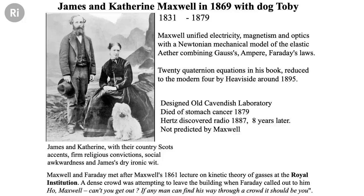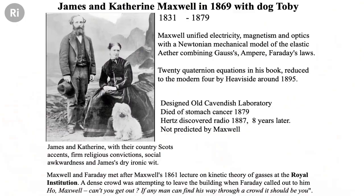Maxwell unified electricity, magnetism, and optics using a mechanical model of this ether. He applied Newton's laws to this invisible rubber and got his four great equations. He actually got 20 equations, which he put in his book, and then promptly died soon after. It was an extraordinary fellow called Heaviside — an autodidact who lived with his mother in southern England — who reduced Maxwell's equations to the four that we teach our students today in electrical engineering and physics departments.